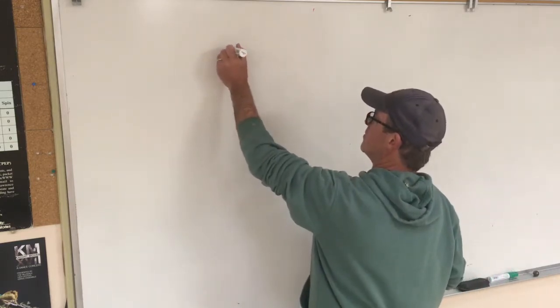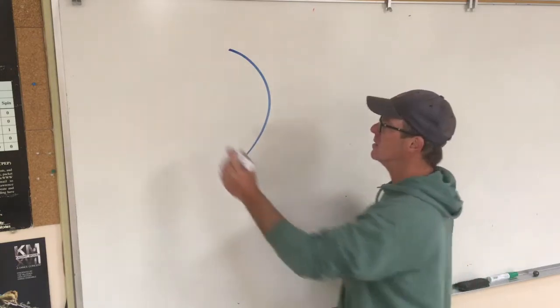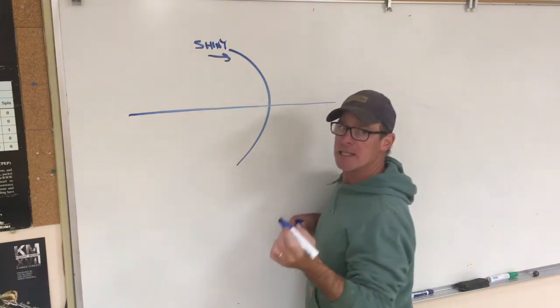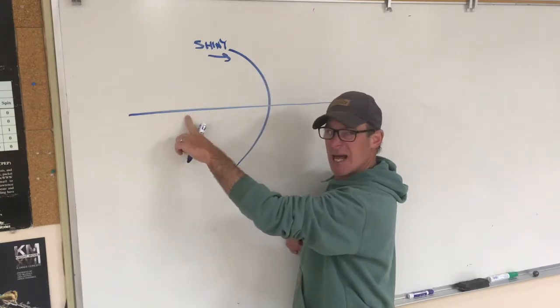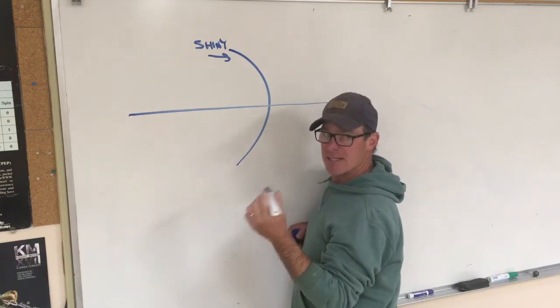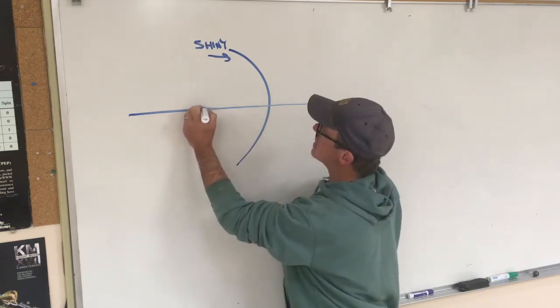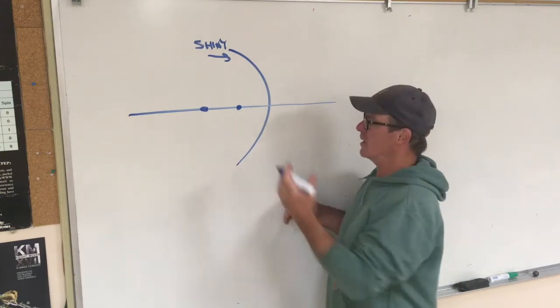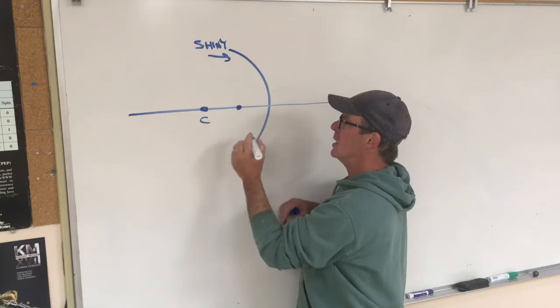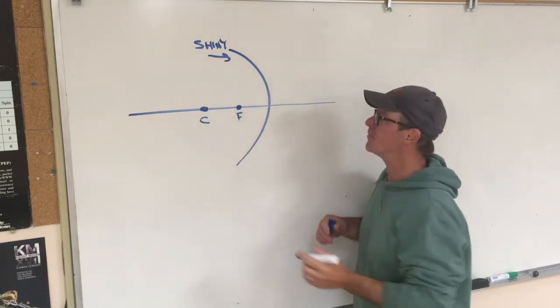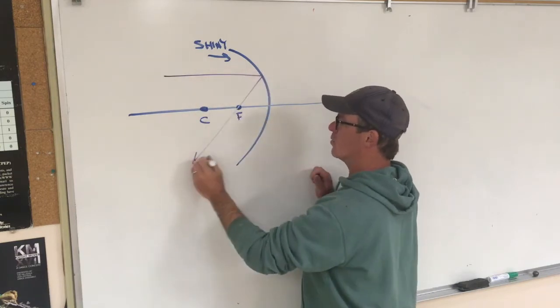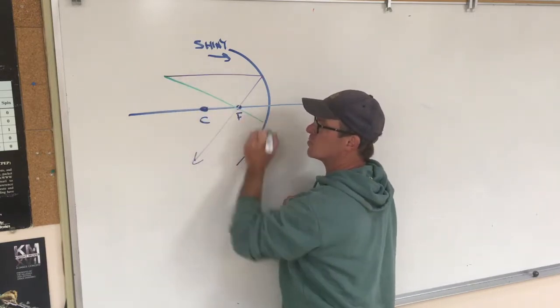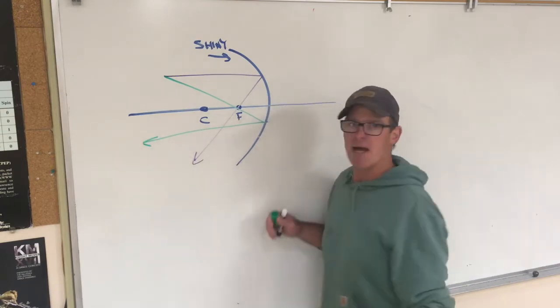I want to remind you that for mirrors we have concave and convex. For a concave mirror, this is the shiny side here, and all rays that are traveling parallel to this principal axis all reflect through what's called the focus. The focus is approximately halfway between the center, the radius of curvature, and the shiny surface of the mirror. So again, a parallel ray reflects through the focus. Conversely, a ray that leaves an object and goes through the focus leaves the shiny surface traveling parallel to the principal axis.